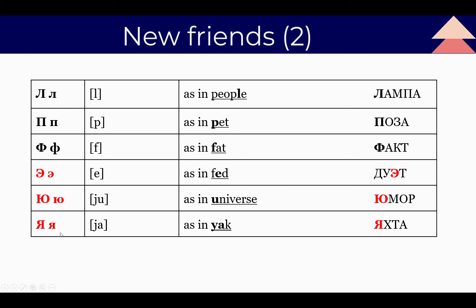The next vowel is Я — sounds 'ya,' and it means 'myself' in Russian. So this letter is already a word — Я means 'I' or 'me.' As in the English word 'yak.' The Russian word: Я, Х, Т, А — Яхта. Can you read it? Яхта — a yacht. Let's repeat the new vowels: Л, П, Ф, Э, Ю, Я.